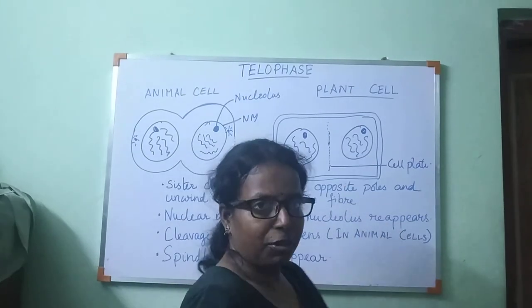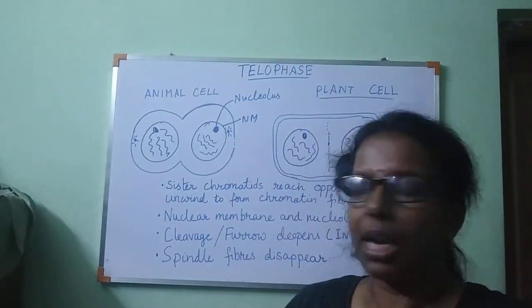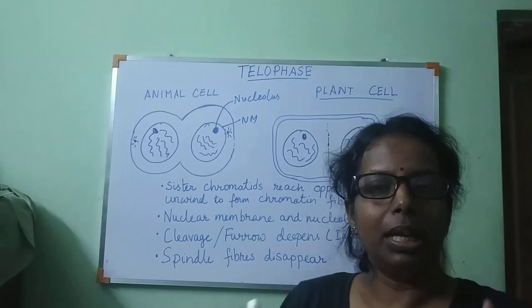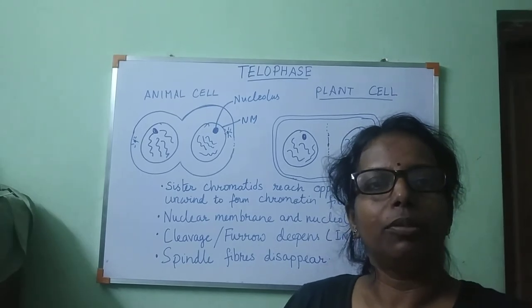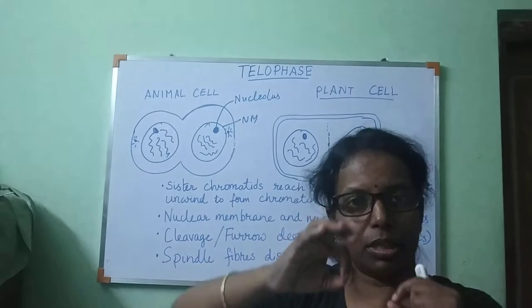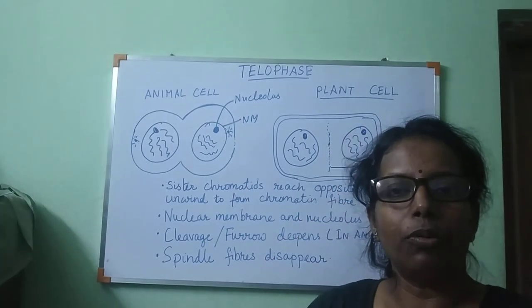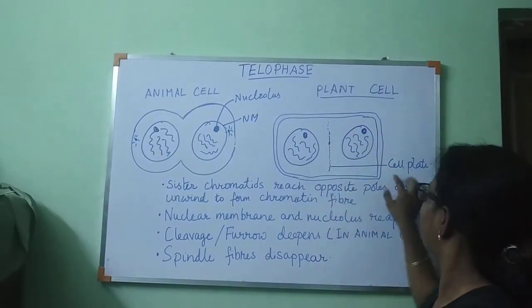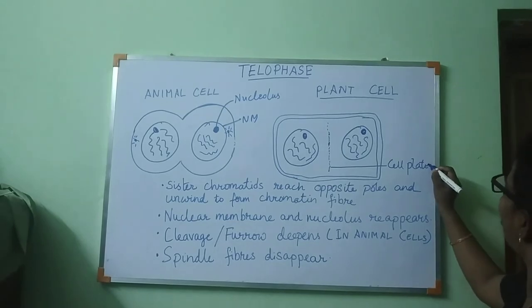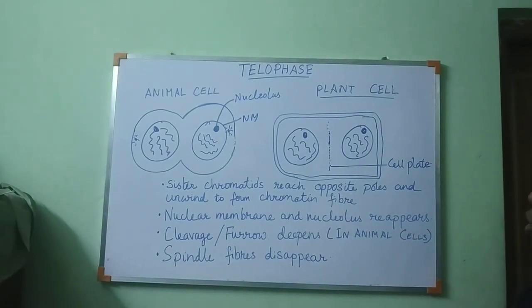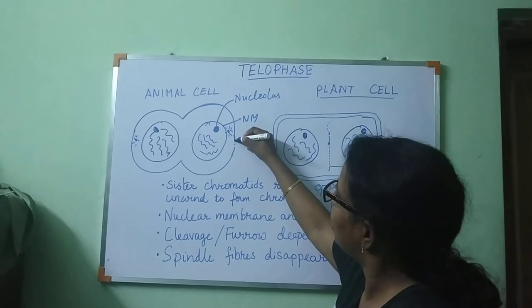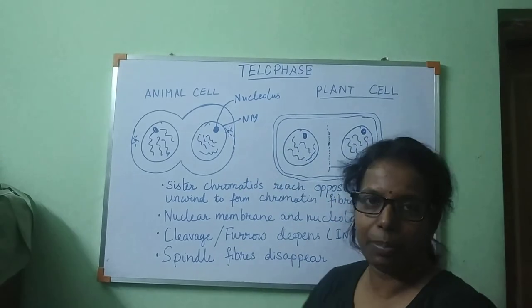In the exam, if you are asked to differentiate between animal cell and plant cell based on what happens during telophase, you have to say: in an animal cell there is furrow formation, but in a plant cell there is formation of a cell plate.